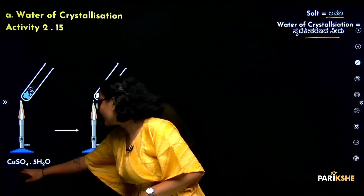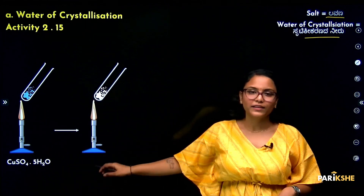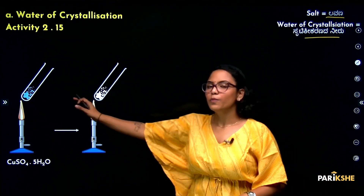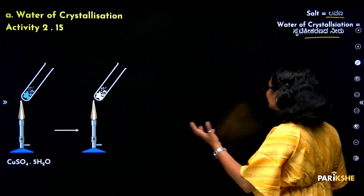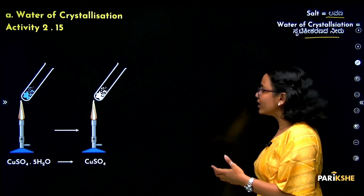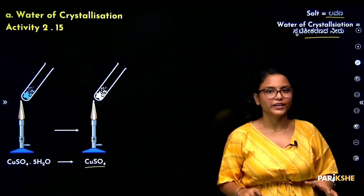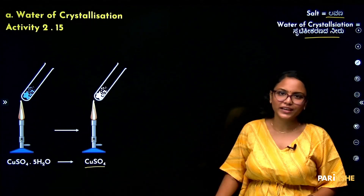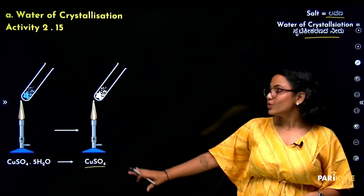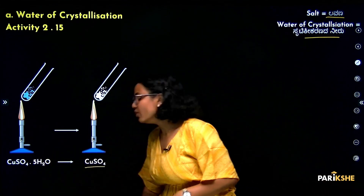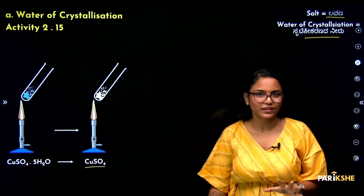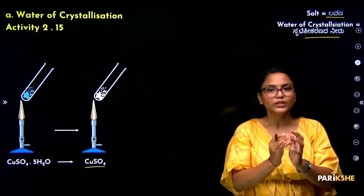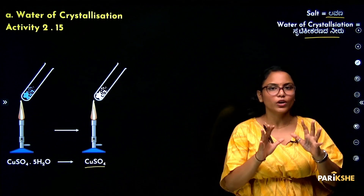The formula for copper sulfate is CuSO₄·5H₂O — this is the blue color compound. When heated, the 5H₂O molecules are removed. This 5H₂O represents the water of crystallization.